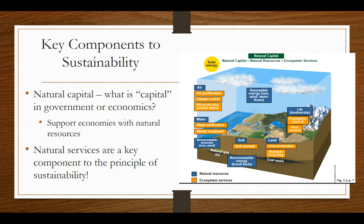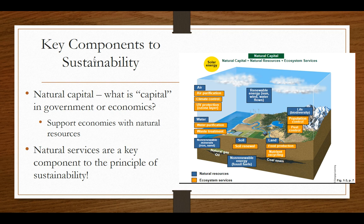Another key component of sustainability is natural capital. In economics we talk about capital as money, but natural capital refers to things from the environment that support our economy. For example, when we go into a forest and cut down trees to sell to the timber market, those trees are natural capital. Natural capital and natural services are key to sustainability because they help with the renewal of air, water, and soil, and we can profit from them in the future.